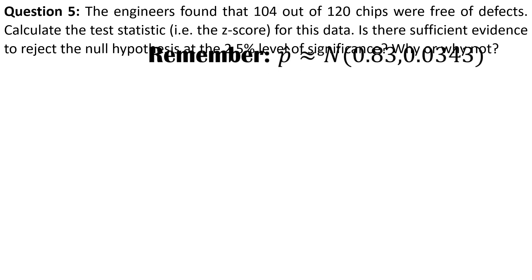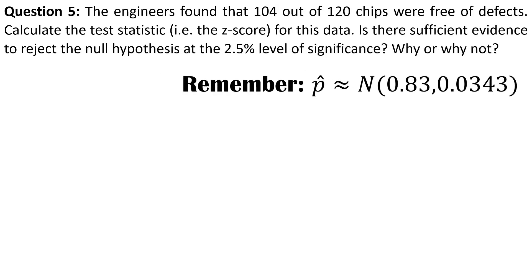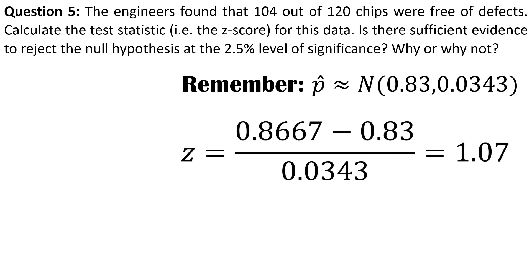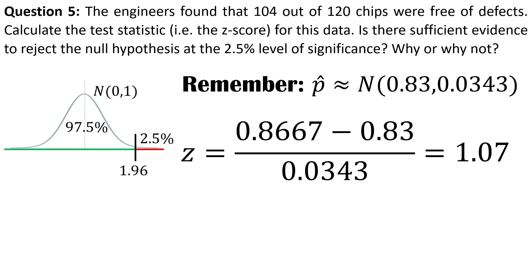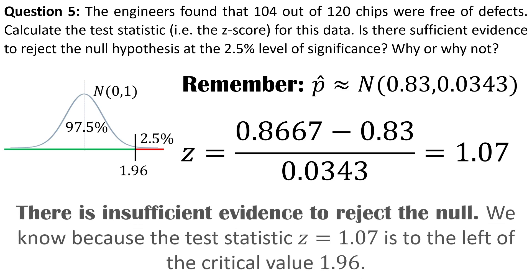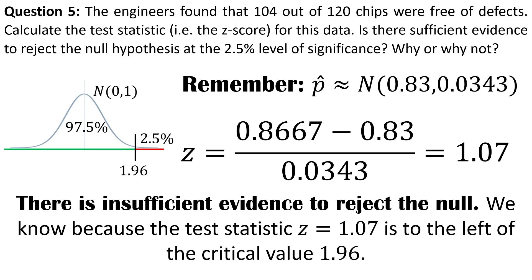Here we have some data. With 104 chips out of 120 non-defective, P-hat is 104 divided by 120, which is 0.8667. Subtracting the mean under the null and dividing by the standard deviation, we get a test statistic of 1.07. So 0.8667 is just a bit more than one standard deviation above the mean value of 0.83 under the null hypothesis. Keeping our decision rule in mind, we're going to fail to reject the null hypothesis, since the test statistic is to the left of the critical value in this upper-tail scenario.